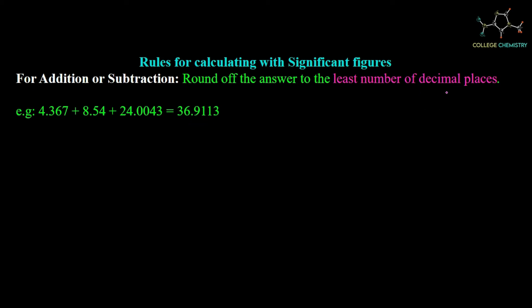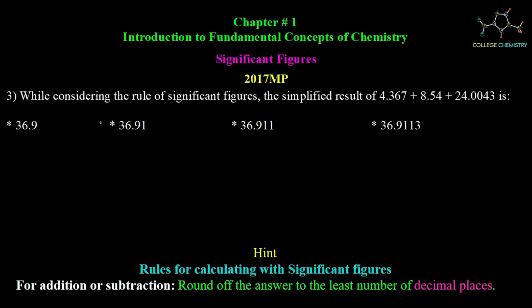The calculator answer is 36.9113. We now round off to the least number of decimal places among the three numbers being added. After checking decimal places in each value, the correct rounded answer is 36.91. That option is the correct answer.